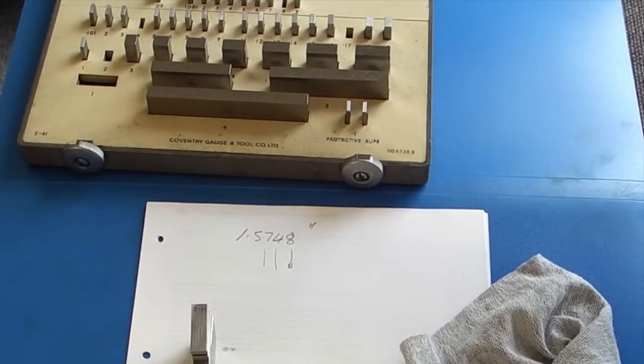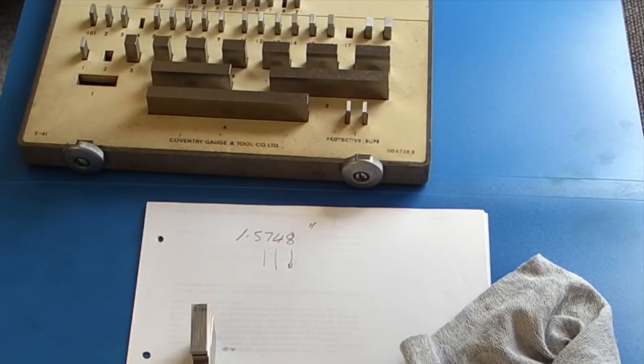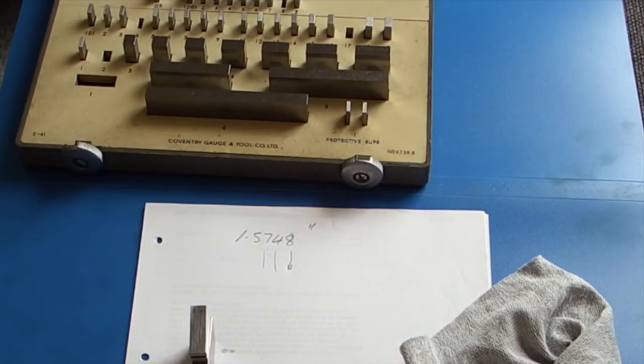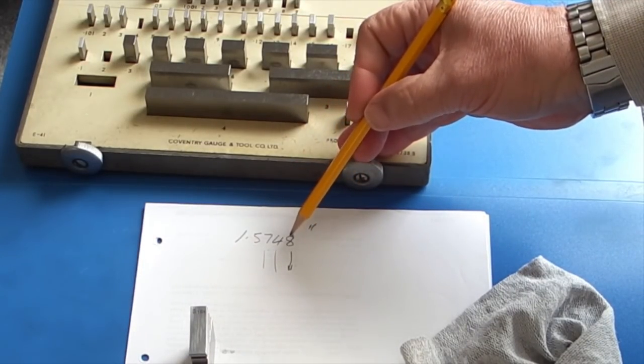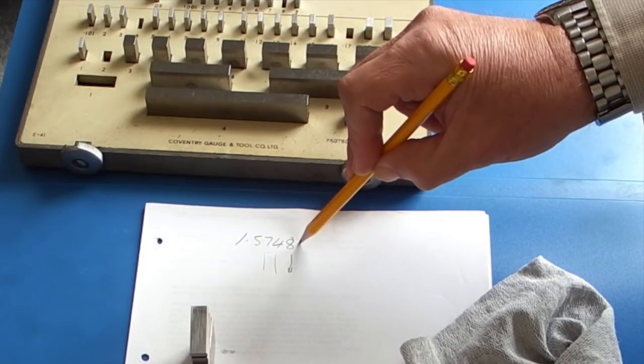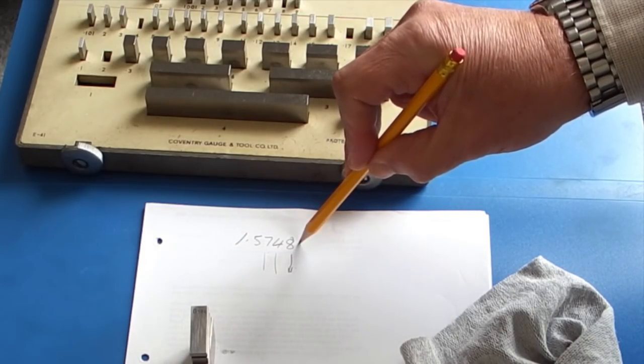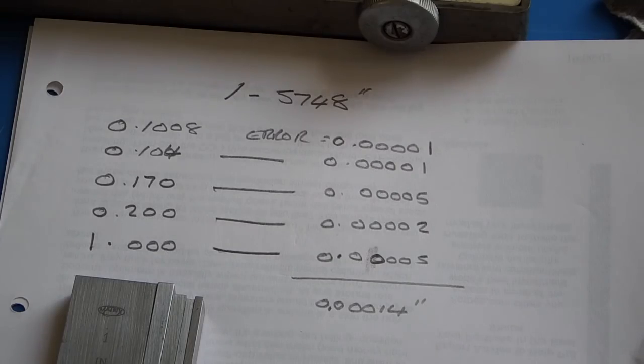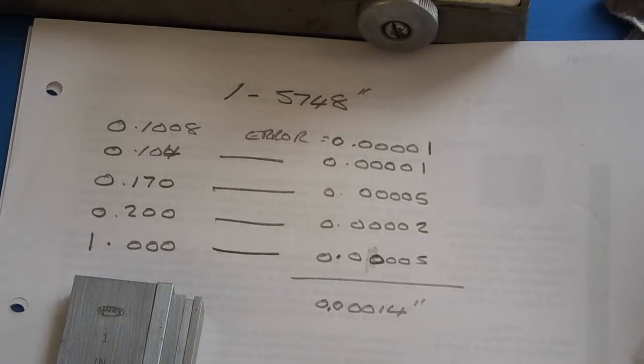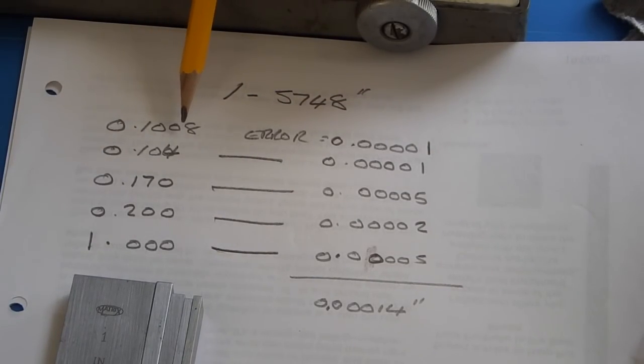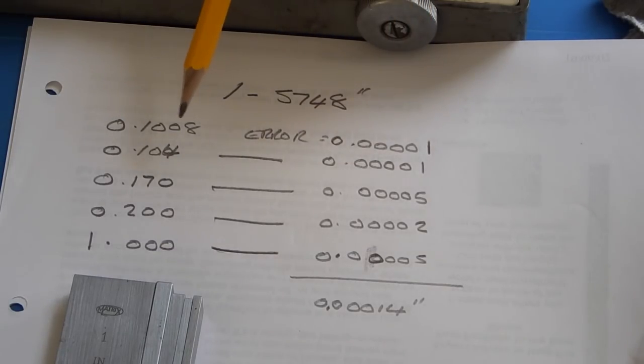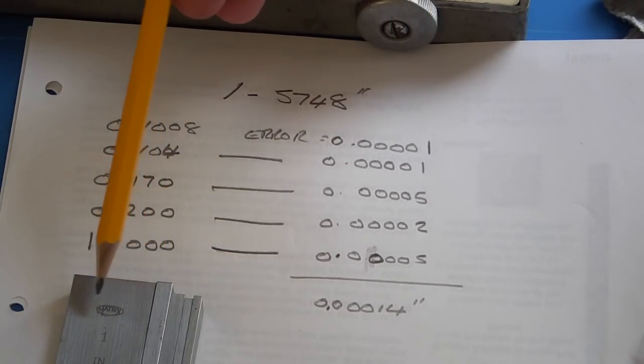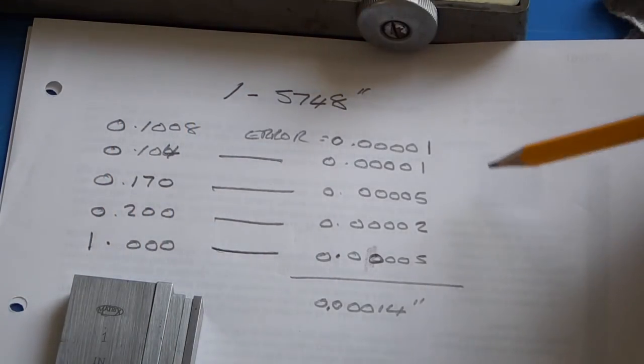The calibration certificate should give you each block listed, what it should read, and what the deviation is from the stated size. Normally the deviation will be a minus from the original size because the blocks do wear out. I think it would be quite rare to find a block that was oversized. So assuming that your calibration certificate gave you this, that the 1.1008 had an error of minus 0.00001, and the other blocks that we've used to build up this size 1.5748 had these errors.